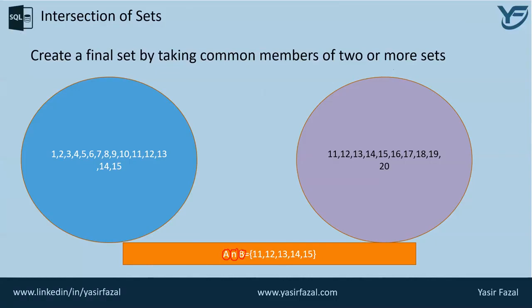Between the parentheses, only the common members are there, which are also present in the two sets that I am highlighting on the screen. I hope you have got the concept of the intersection of sets.